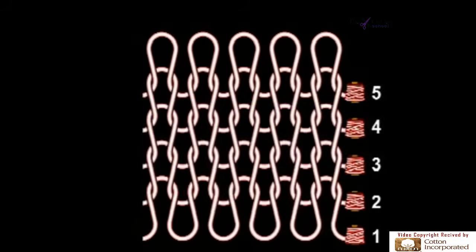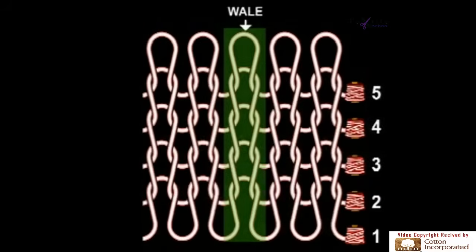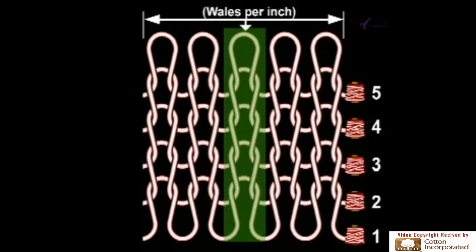The vertical column of loops, produced by the same needle knitting at successive knitting cycles, is referred to as a whale. The whale count is measured by the number of whales per linear length. In this same drawing, there are five whales per inch.